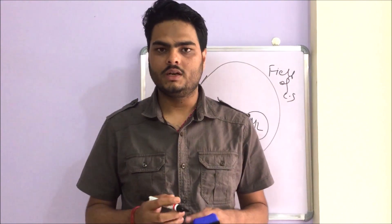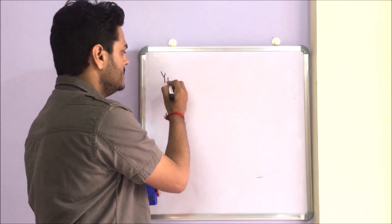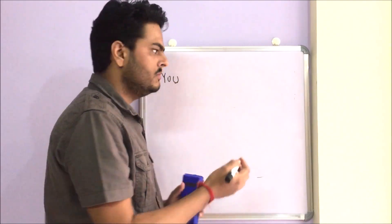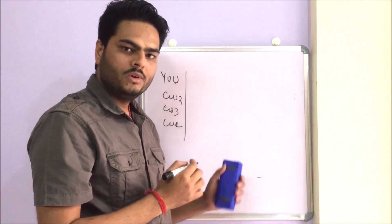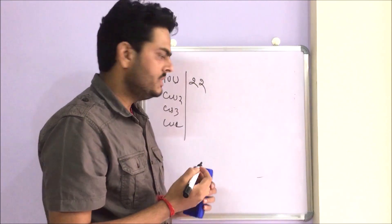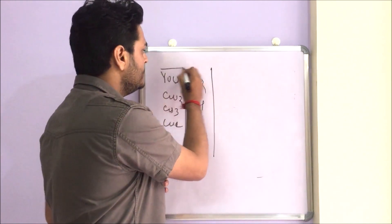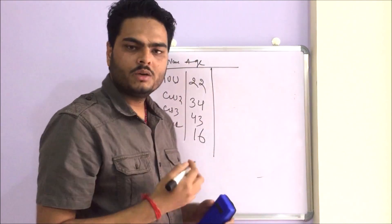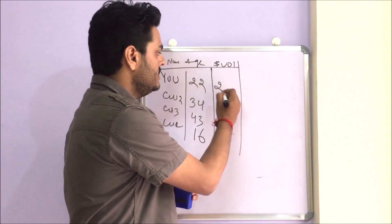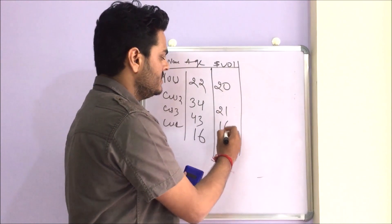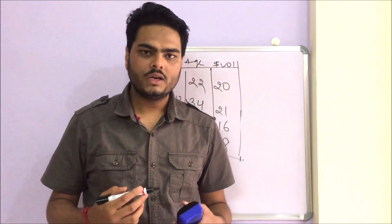Let me move into the main topic for the day: the four major components of machine learning. Let's say you walk into a superstore — this is you, and there are three more customers: customer 2, customer 3, and customer 4. I am capturing your age — let's say you are 22, customer 2 is 34, customer 3 is 43, and customer 4 is 16. I am also capturing another parameter called dollar volume purchased: you buy products worth $20, someone buys $21, another $16, and another $8. What you see here is component number one of machine learning, which we call data.